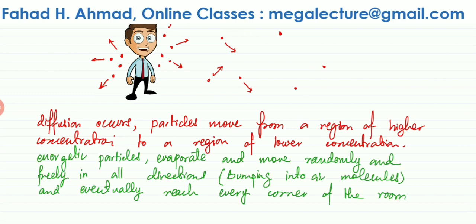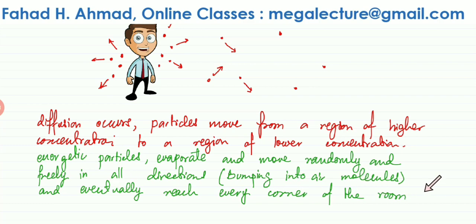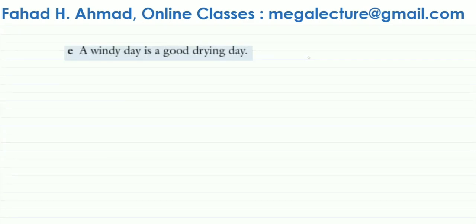The energetic perfume particles evaporate — for example from the person's shirt — change into gaseous state, and move randomly and freely in all directions. They constantly bump into air molecules, which is Brownian motion, travel in a zigzag manner, and eventually reach every corner of the room. The whole process of particles spreading from one end to the other is called diffusion.